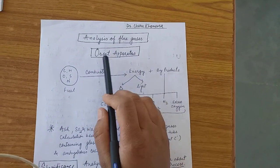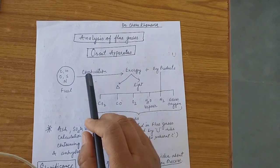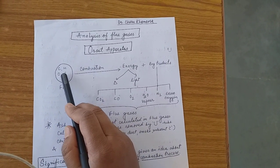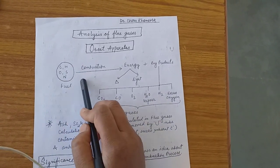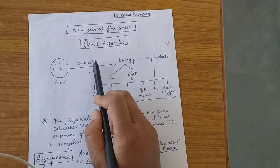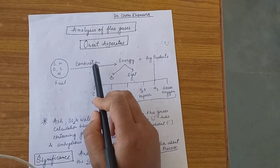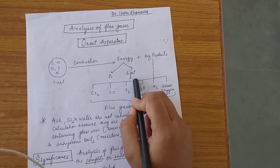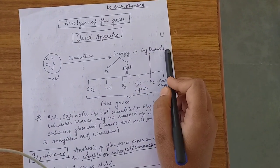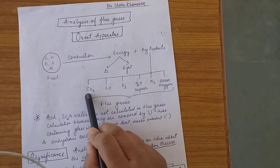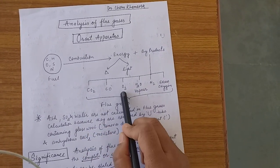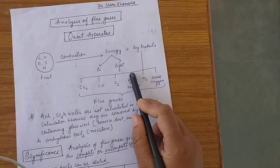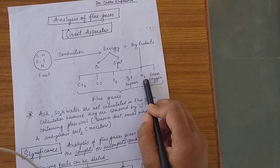Analysis of flue gases can be done by Orsat apparatus. As we know, the fuel is made up of different elements: carbon, hydrogen, oxygen, sulfur, and nitrogen. After combustion, when fuel is burned in the presence of oxygen, it produces enormous amount of energy in the form of heat and light. Lots of byproducts are also formed and these byproducts are carbon dioxide, carbon monoxide, oxygen.